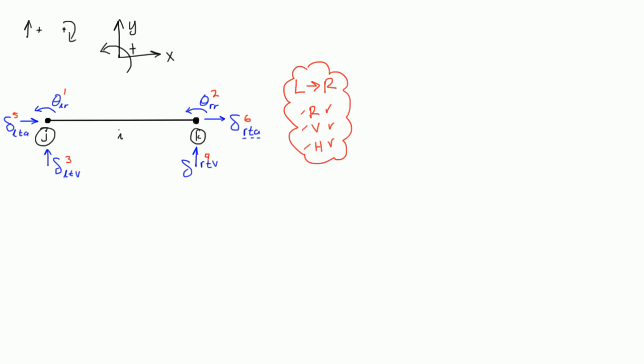And we usually write this as delta squiggly bracket, I guess. That means it's a column vector, right? It means it has many, many rows, but only one column. And I'm going to write this as the six degrees of freedom. I'm going to write in order according to this exploding red, blue cloud here. Left to right, rotation, vertical, horizontal.